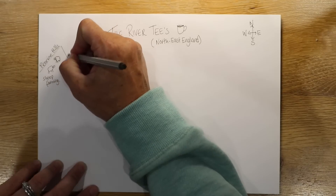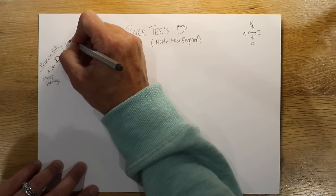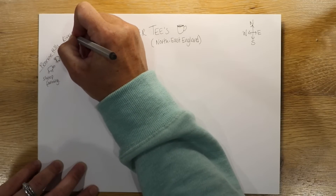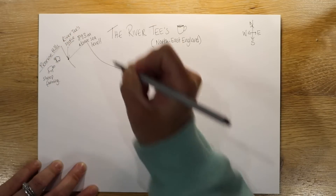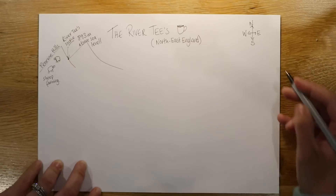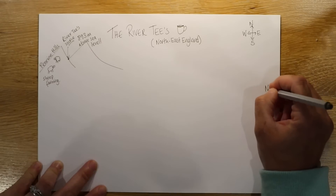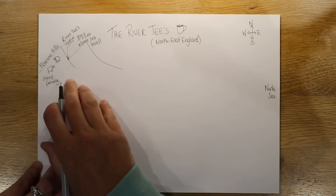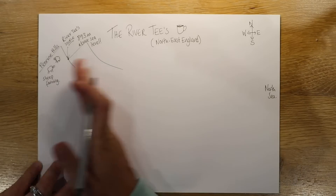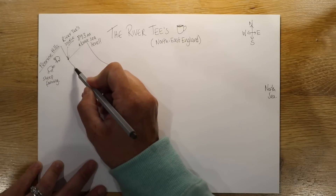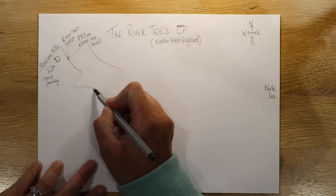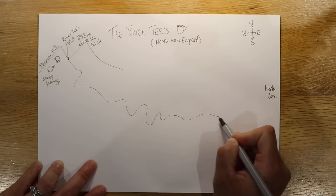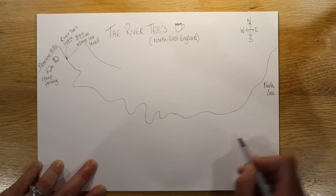So the start of a river is known as the source — think bottle of ketchup. And that is the source of the River Tees. What it does is it makes its way to the North Sea. I'll just put 'North Sea' over here. Now this distance is something like 130 kilometres, but we're obviously going to try and squeeze it onto a page, so we're going to try and draw what it does.